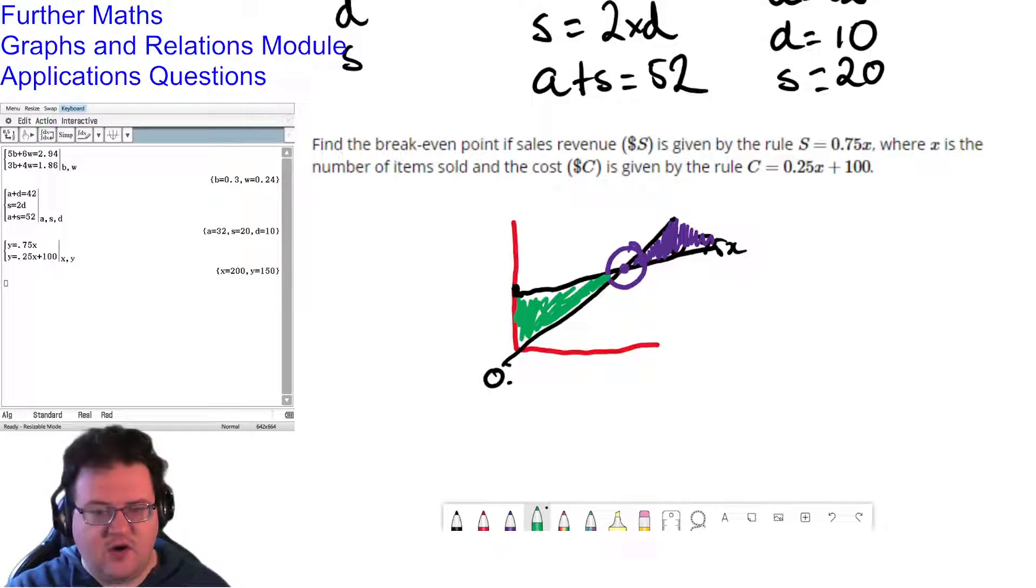So that was a very quick crash course through the application questions from chapter 21. So that was 21, E, G, and H. And I hope that helped.